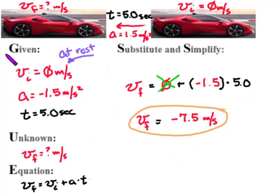But what does it mean? Because the velocity has a negative number, that means that the car is moving backwards.